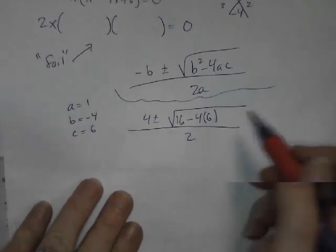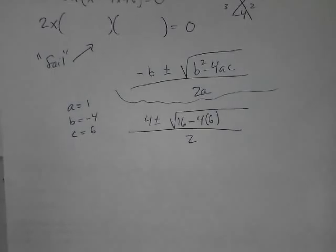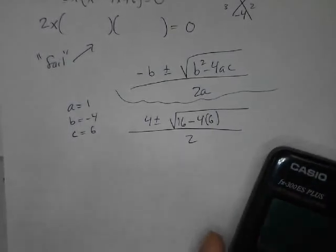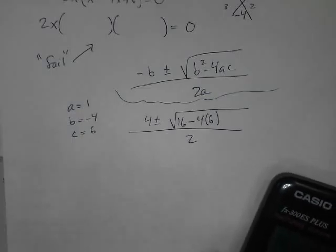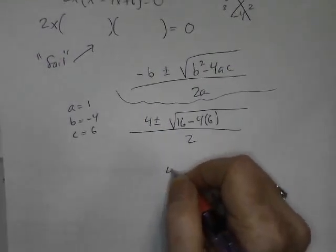And then 6 times 4 is 24, and 16 minus 24, ew, so ugly. 16 minus 24 is negative 8.